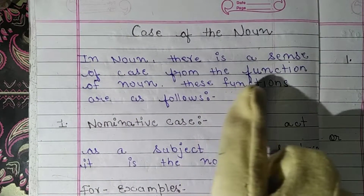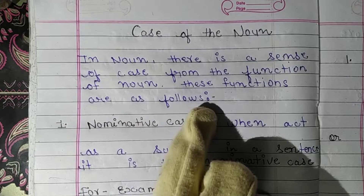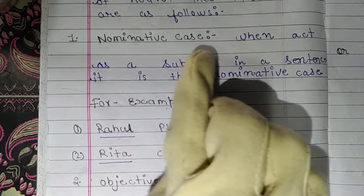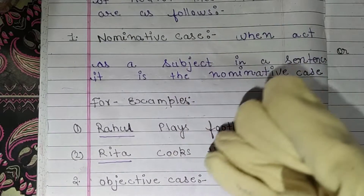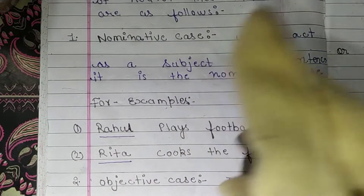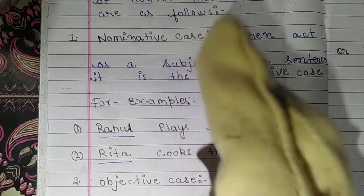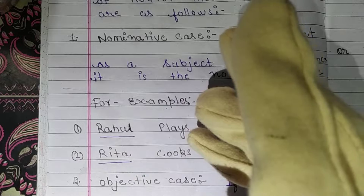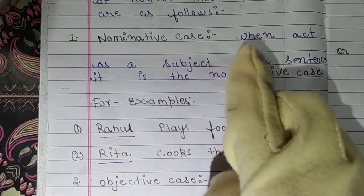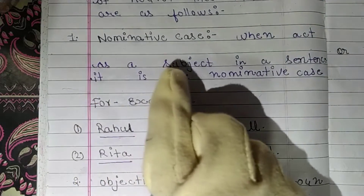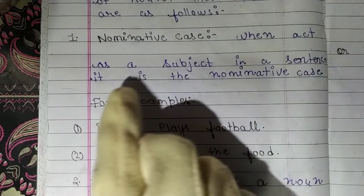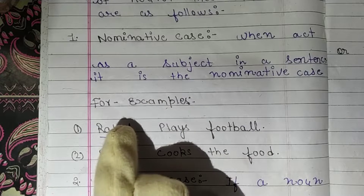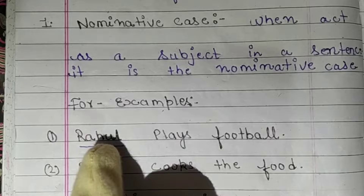The functions are as follows. The first is nominative case. When a noun acts as a subject in a sentence, it is called the nominative case. So guys, let's start: first, nominative case — when a noun acts as a subject in a sentence, it is the nominative case.